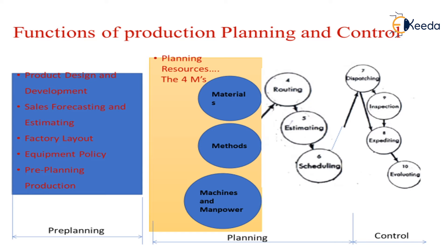Generally, production planning and control deals with three topics: pre-planning, planning, and control. In the pre-planning process we have product design and development, sales forecasting and estimating, factory layout, equipment policy, and pre-planning and production.